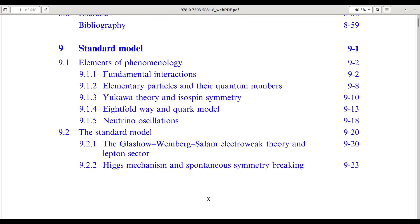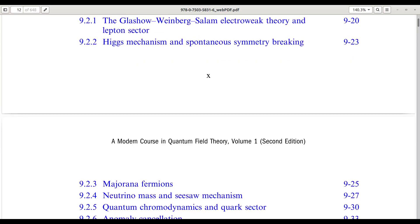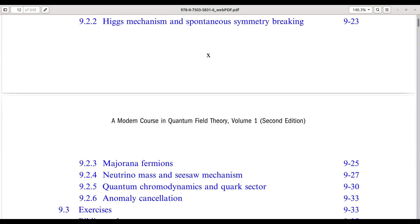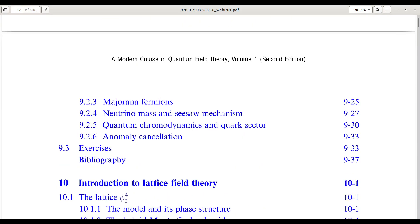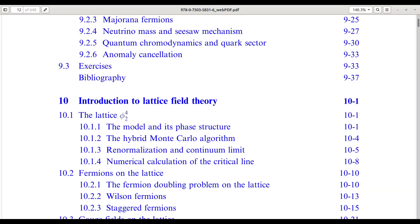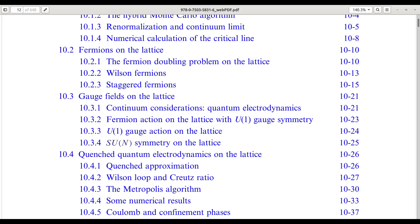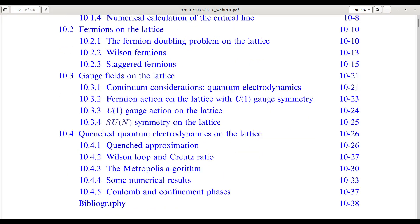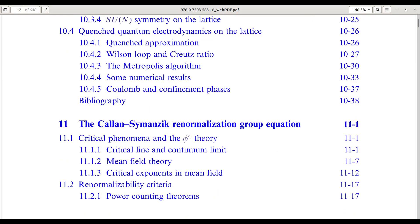Chapter 9 constructs the full standard model Lagrangian, including spontaneous symmetry breaking, the Higgs mechanism, and the quark and lepton sectors. We also discuss anomaly cancellation and neutrino mass generation. In chapter 10, we step into lattice field theory: fields are discretized, the Metropolis algorithm is introduced, and the basics of numerical simulations are outlined, laying groundwork for computational QFT.